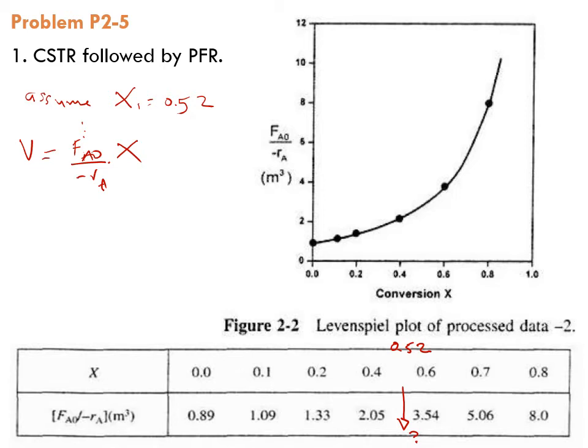Now we can interpolate, and is it fine to interpolate? Well, it's very much fine because the relationship between F_A0 over minus r_A and X between 0.4 and 0.6 is acceptable if we take it as a linear relationship. That's why we use two-point linear interpolation.